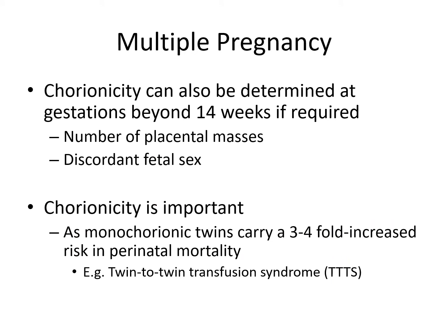Chorionicity, though best interpreted at that early gestation, can also be determined beyond 14 weeks by looking at the number of placentas — two placentas would indicate a dichorionic pregnancy. Checking the baby's sex is also helpful: if you have one male and one female fetus, that definitively indicates a dichorionic pregnancy. If they are the same gender, then the number of placental masses should be the guide.